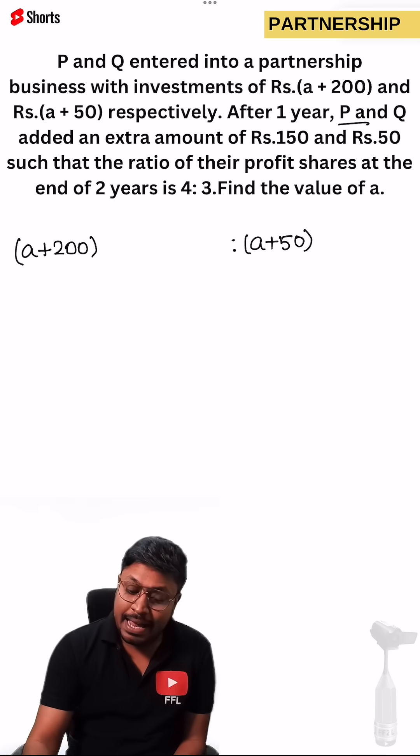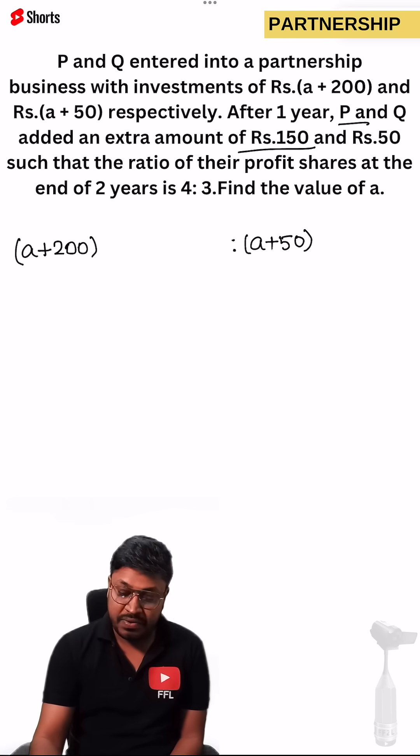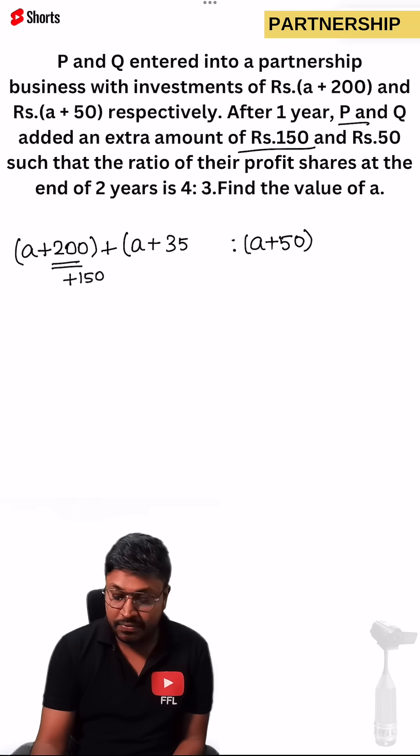After one year, P added an additional amount of 150. So already he is investing A plus 200, so now he is adding additional of 150. For the second year, he will be investing A plus 350.